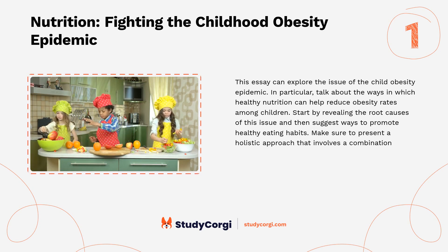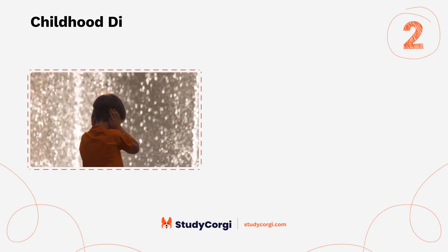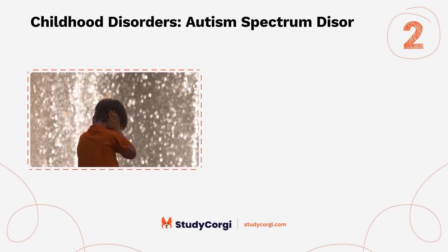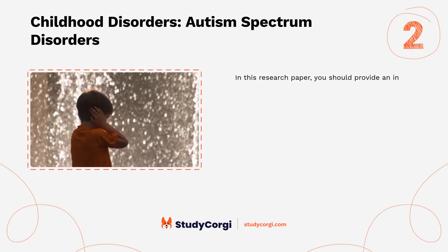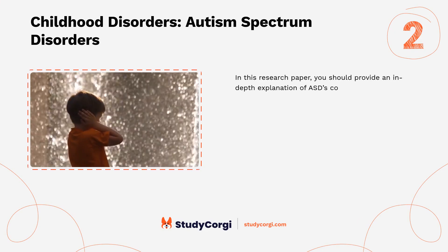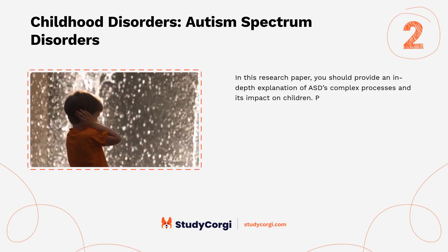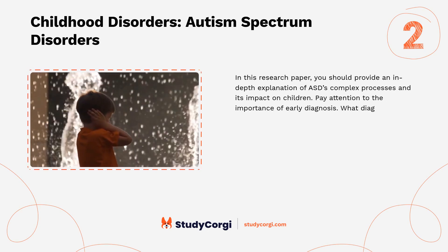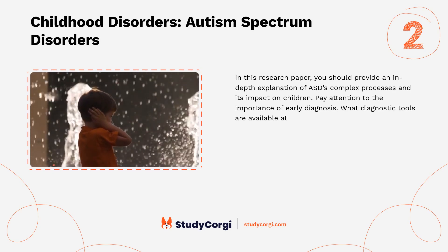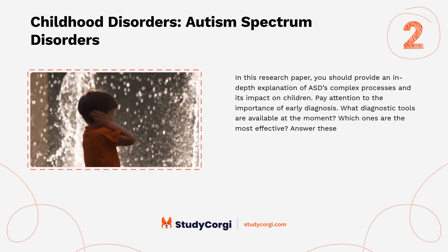Childhood disorders: autism spectrum disorders. In this research paper, you should provide an in-depth explanation of ASD's complex processes and its impact on children. Pay attention to the importance of early diagnosis — what diagnostic tools are available at the moment, and which ones are the most effective? Answer these questions in your essay.